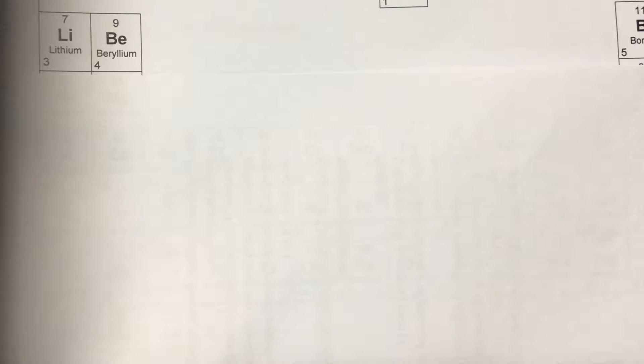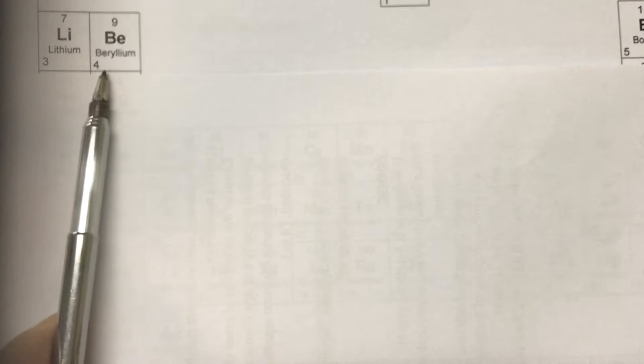Next, to answer which group that the element belongs to, we have to look at the electronic structure. Let's look at the atomic number first. For lithium, it's 3. Beryllium, it's 4. I use these two examples to show how we derive the group number.